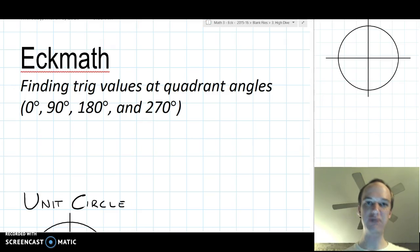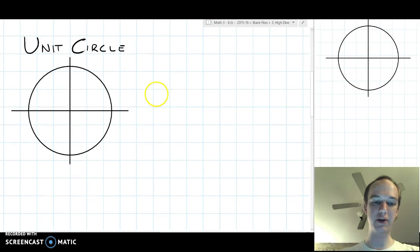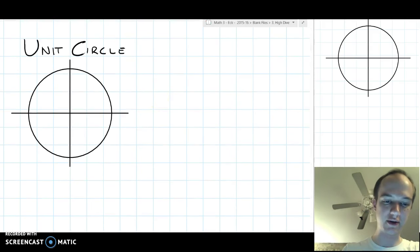The thing that you need to know to do a trig value of a quadrant angle is the unit circle. So my unit circle looks like this, and it's called the unit circle because it has a radius of 1.